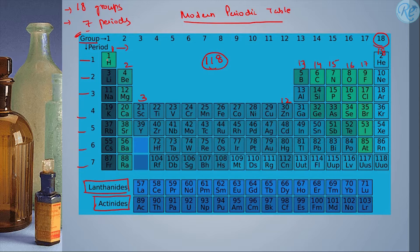The first group consists of hydrogen, lithium, sodium, potassium, rubidium, cesium, francium, and these are known as alkali metals.